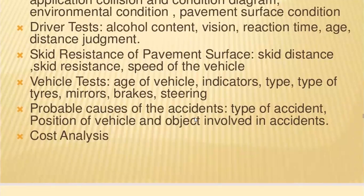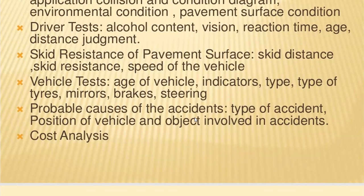Next, how much was the skid resistance of the pavement surface? How much was the distance and resistance? How much was the speed of the vehicle when the accident happened? Then we do the vehicle test — indicators, class, tires, mirrors, brakes, and steering. We test all these different vehicle components.